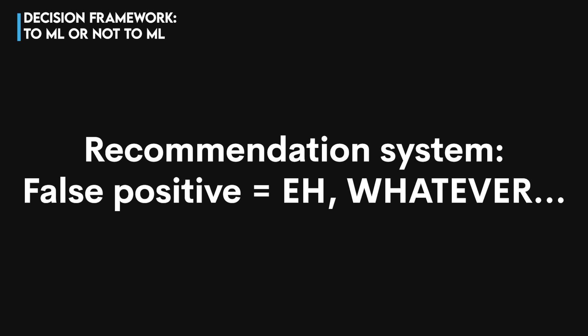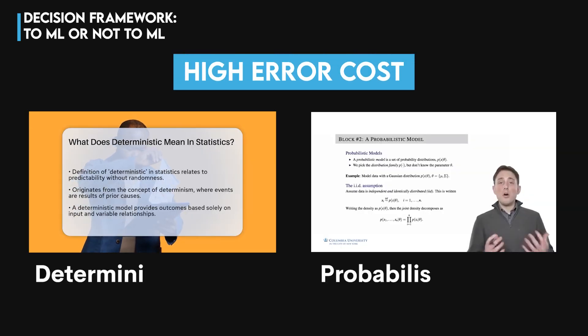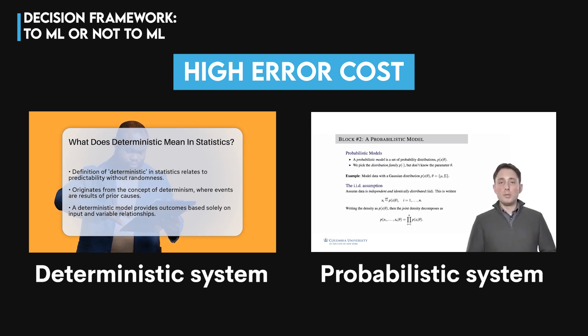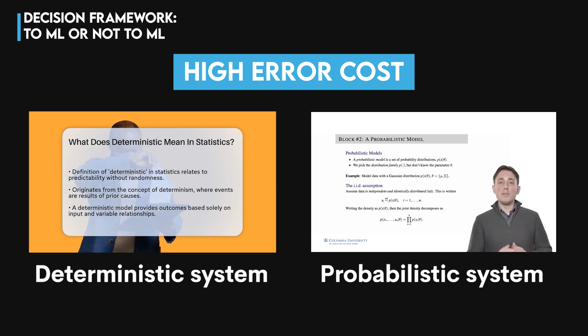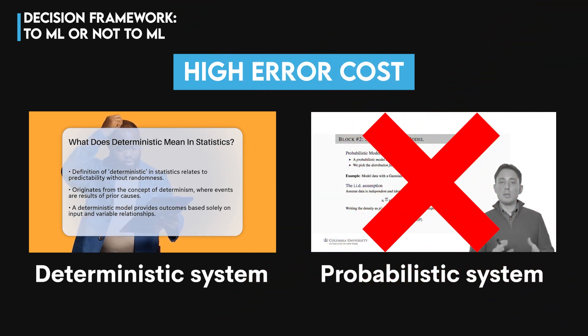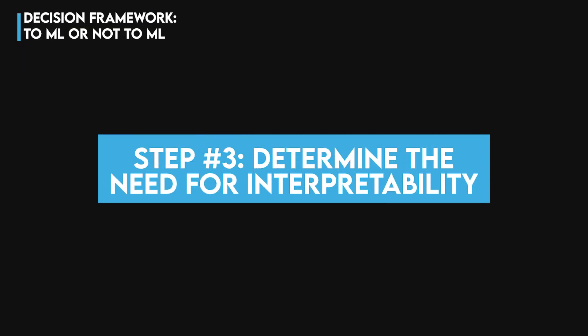For a recommendation system, a bad recommendation is trivial. If the cost of an error is unacceptably high, you need a deterministic system, not a probabilistic one like machine learning.